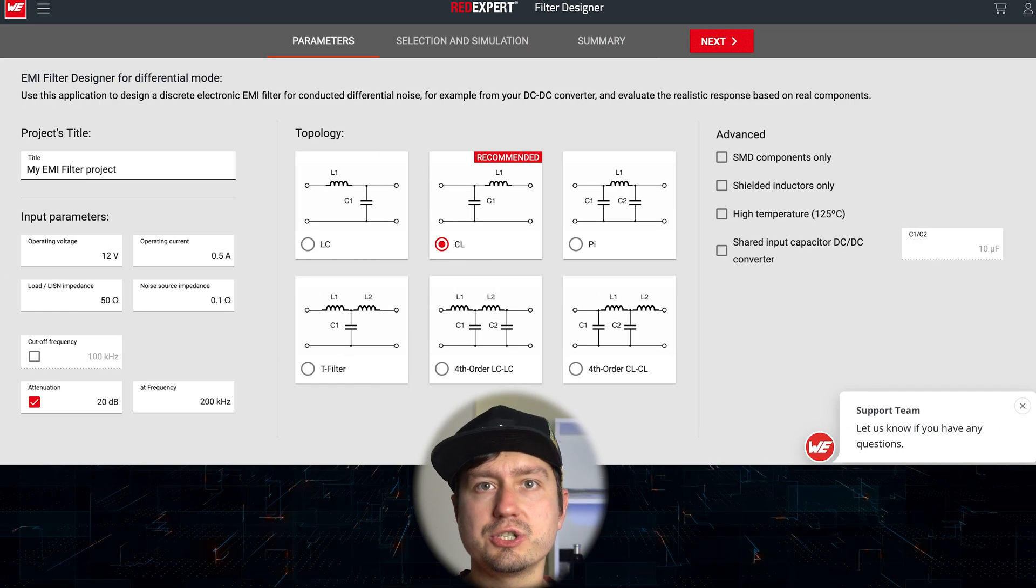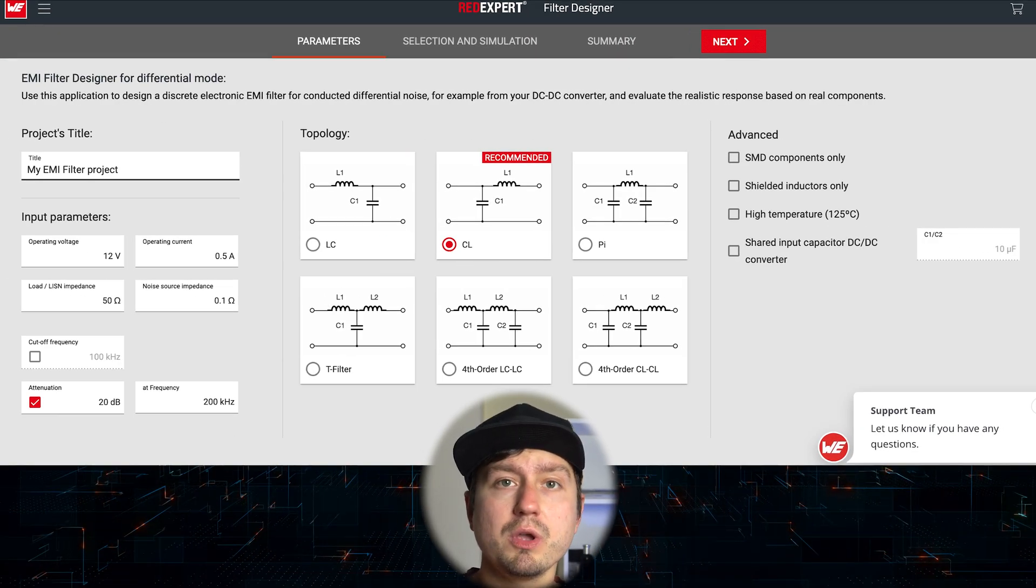If you do happen to know the exact center frequency that you need to filter out, then you can either use an online calculator such as the Wurth Electronic, or you can calculate the filter values by yourself and I will provide the link in description for both. The best practice that you can follow when designing EMI filter is to leave enough space for modifications.